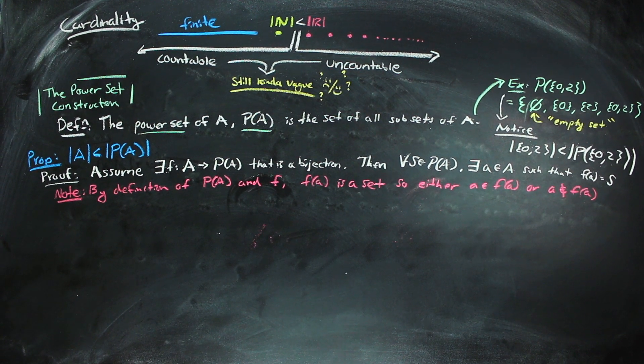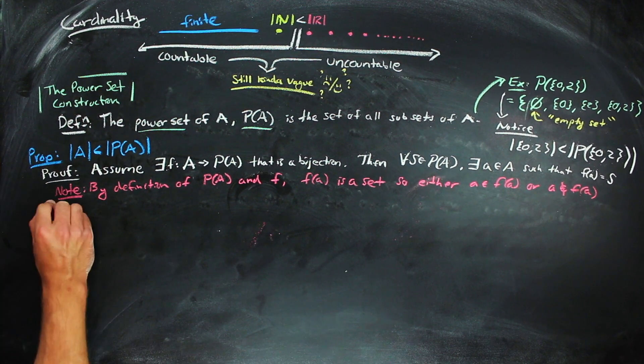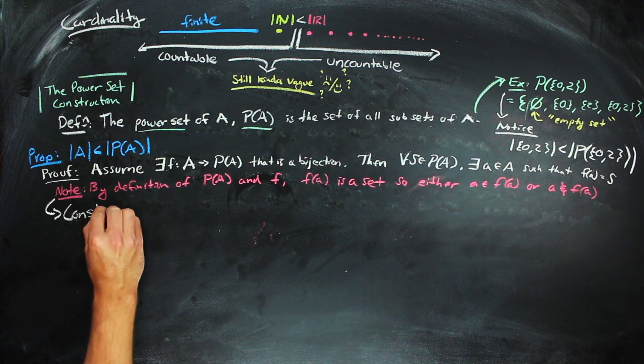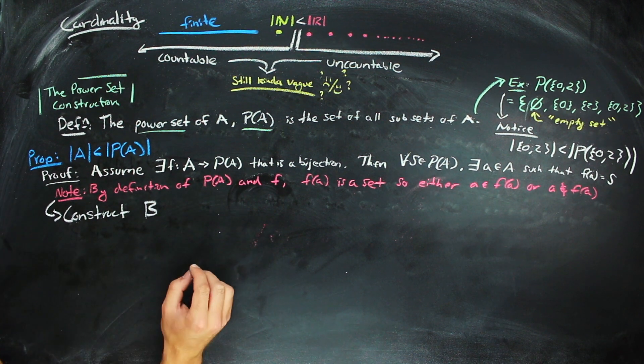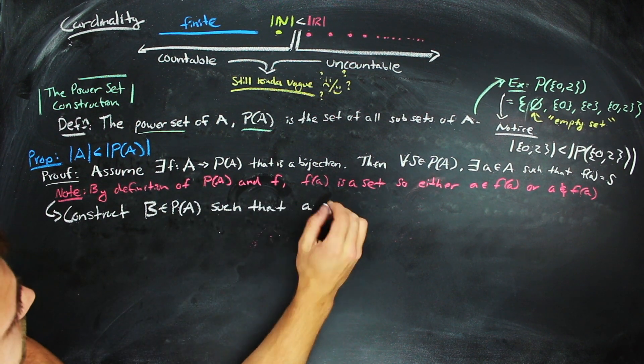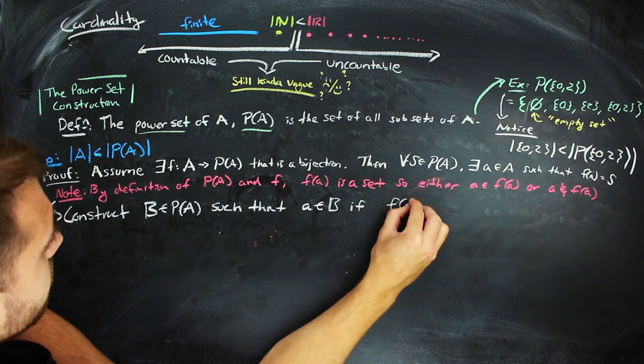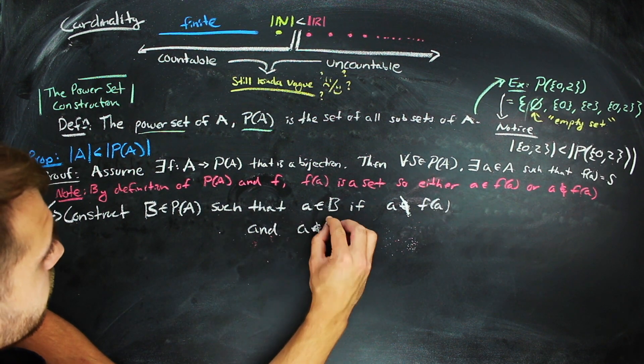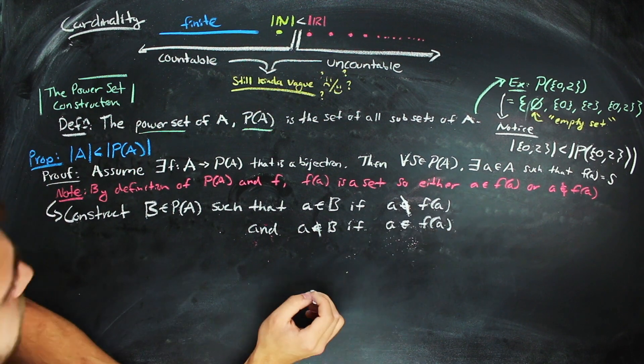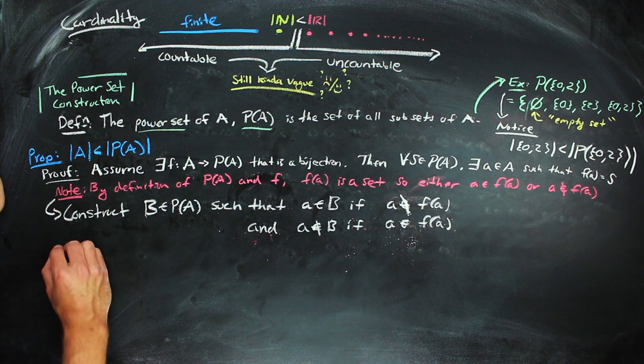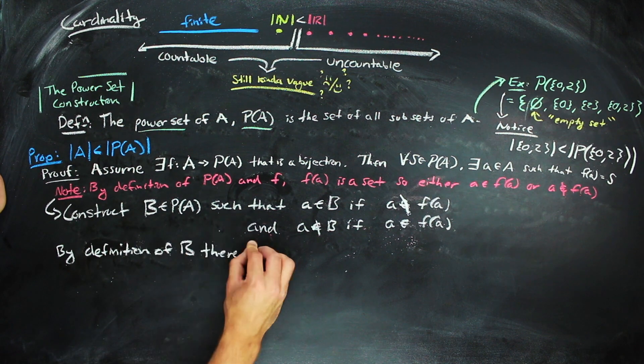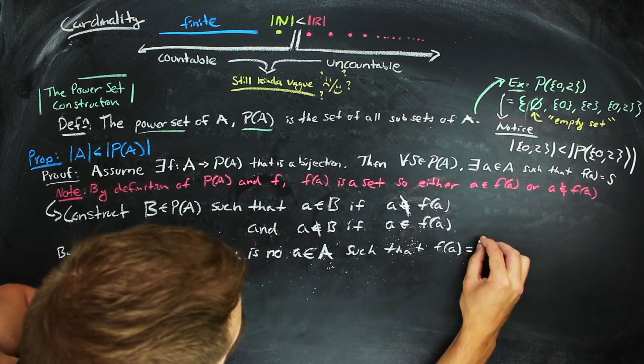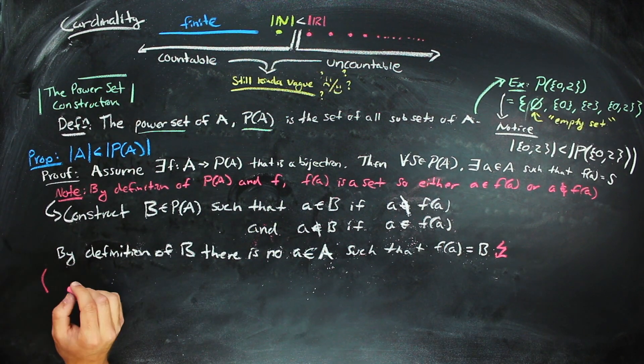We're going to use this binary fact to create a new set b that can't be hit by applying the function to anything in a. That is, if a is in f of a, then we're going to not have it in b. And if a is not in f of a, then we're going to have it in b. By definition of b, there is no a in our set a such that f of a is equal to b. And this gives our contradiction.